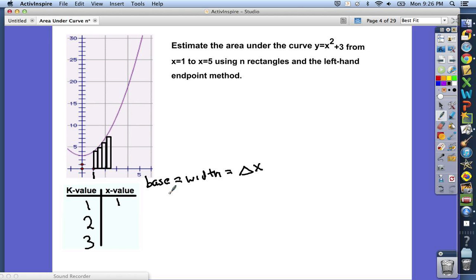So the width of each rectangle is going to be found by taking the highest x value in the interval minus the lowest x value divided by the number of rectangles. So in this case, the width of each rectangle will be 4 divided by n.